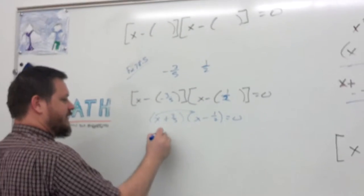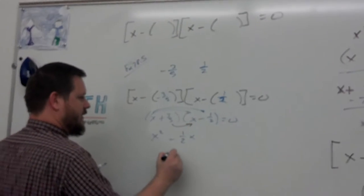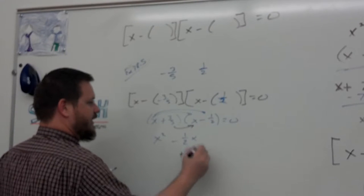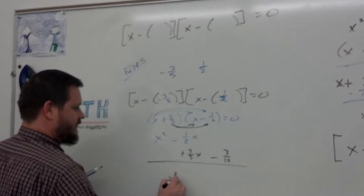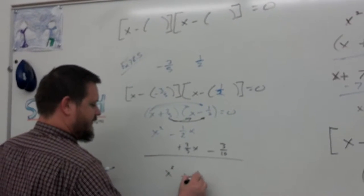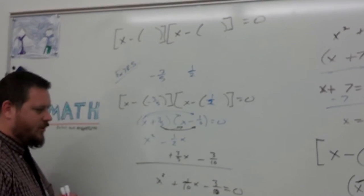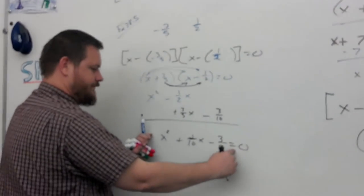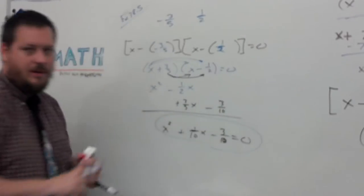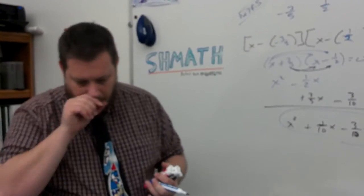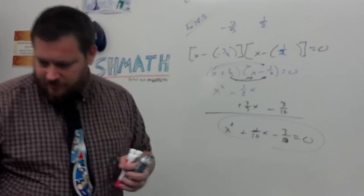We've got x minus negative three-fifths times x minus one-half equals zero. We've got x times x is x squared, x times negative one-half is negative one-half x. Three-fifths times x is three-fifths x, three-fifths times negative one-half is negative three-tenths. And we've got it all together. We have x squared plus one-tenth x minus three-tenths. And it asks for a quadratic equation with a lead coefficient of one. And there we go.